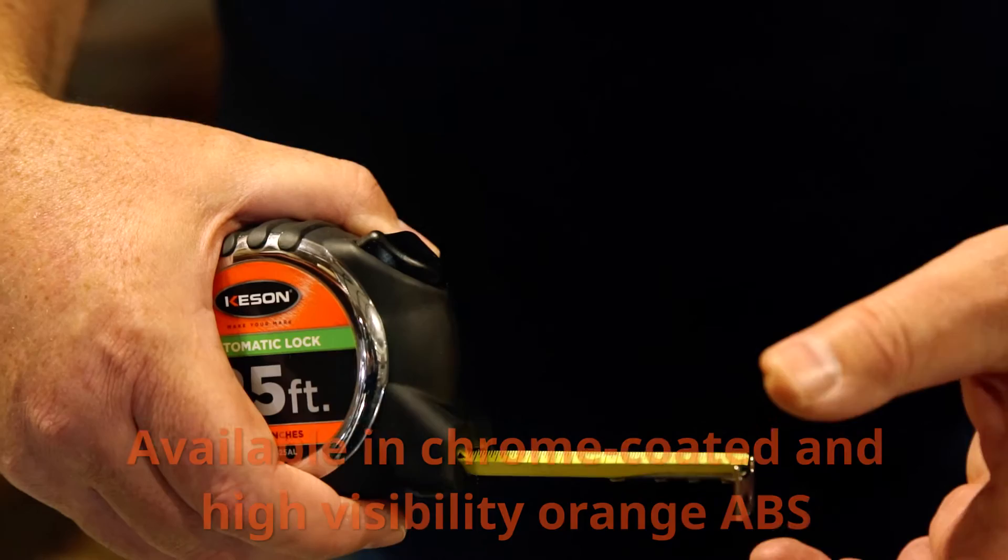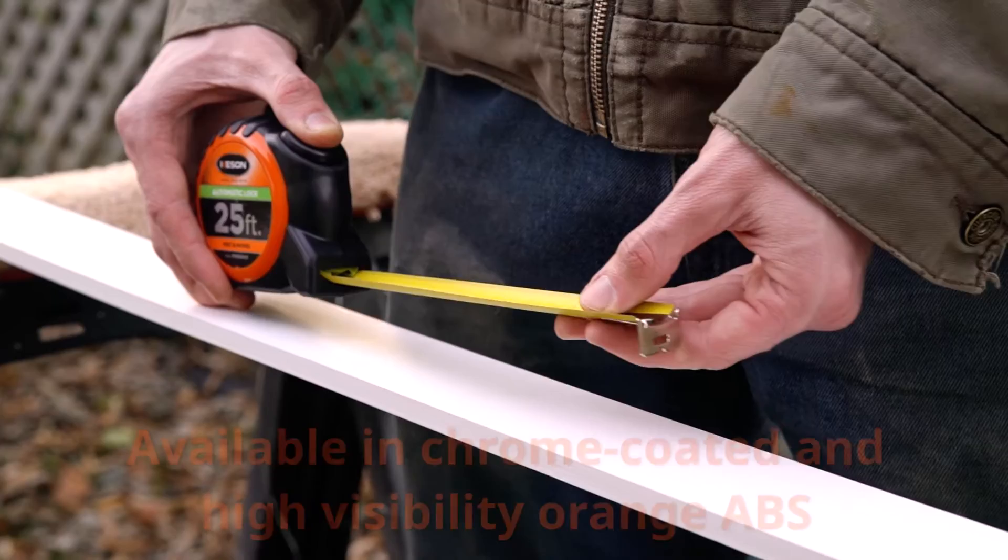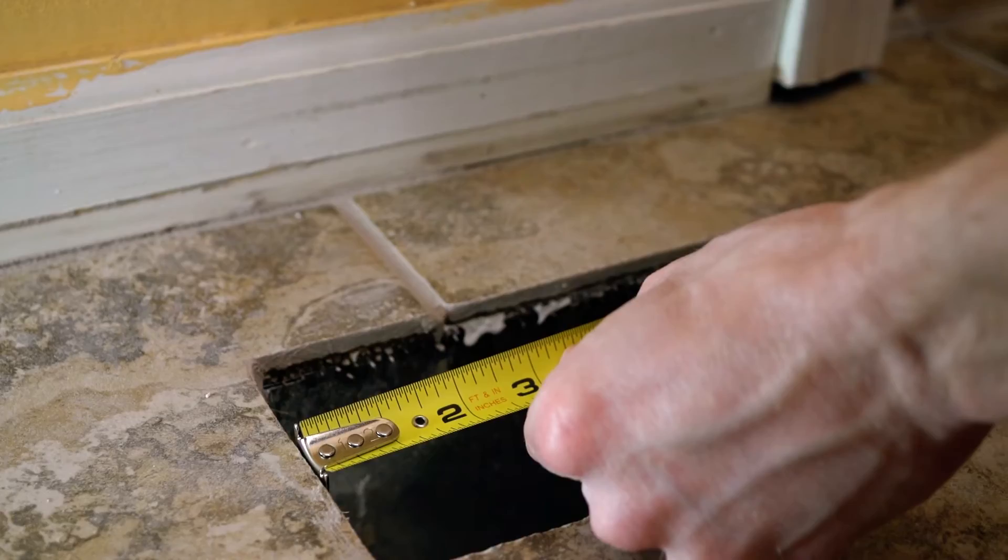Kassin Auto-Lock tapes are available in both chrome-coated and high-visibility orange ABS cases. We offer this tape in 25 feet lengths.